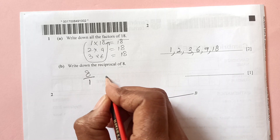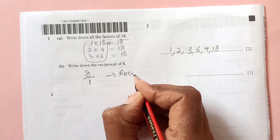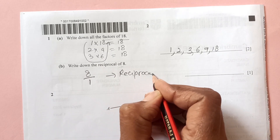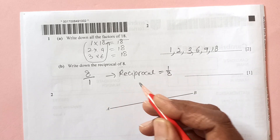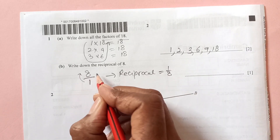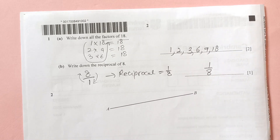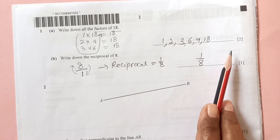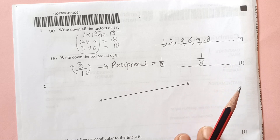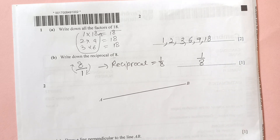Now write down the reciprocal of 8. So 8 is actually 8 over 1, and the reciprocal is 1 over 8 — you just swap the numerator and denominator. These questions are very easy and you should not lose marks for them — you must attempt them and get the score.